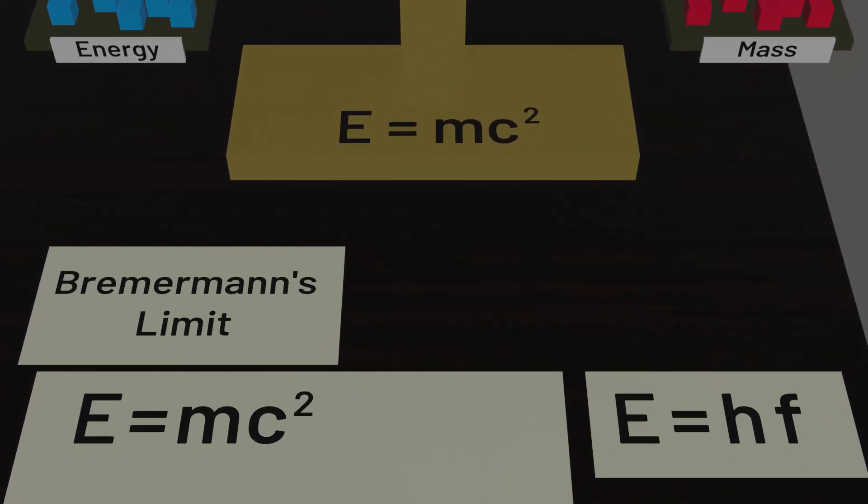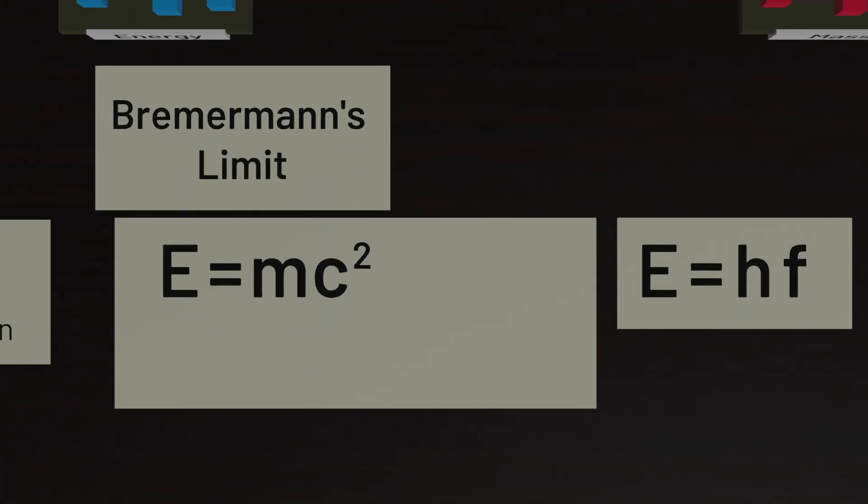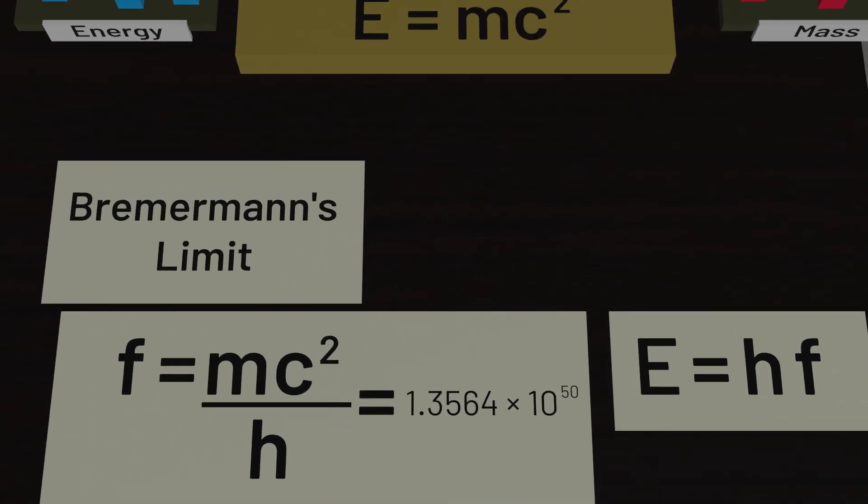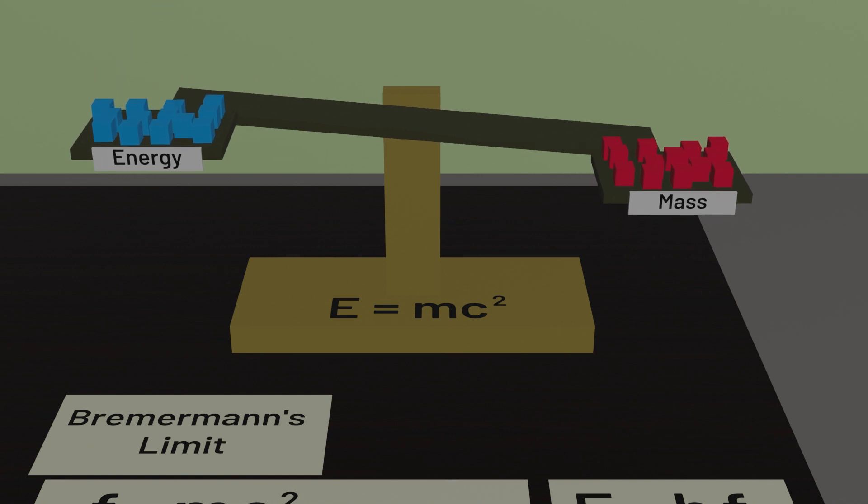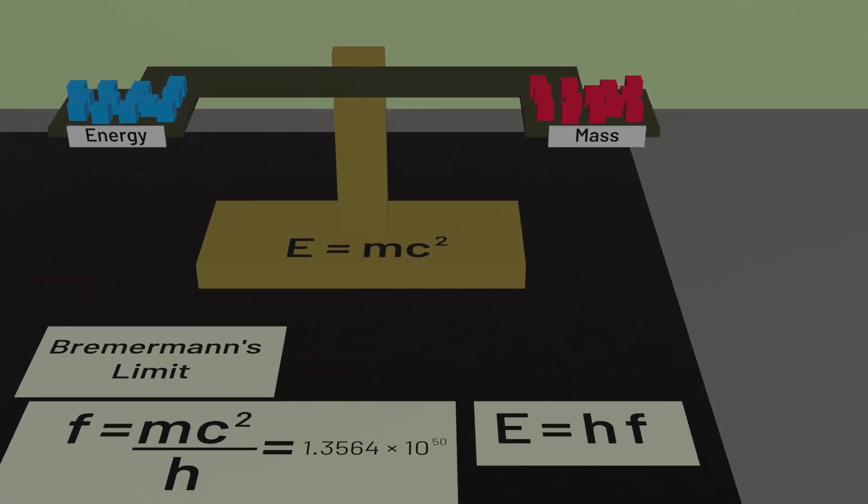And now we can calculate. We take the energy, mc squared, and divide it by Planck's constant. And if we assume a one kilogram computer, we get our answer. 1.3564 times 10 to the 50 as an upper bound on the number of bits that could theoretically be processed every second with a one kilogram computer. Adding more mass means a higher equivalent amount of energy, and therefore more bits we can process per second.